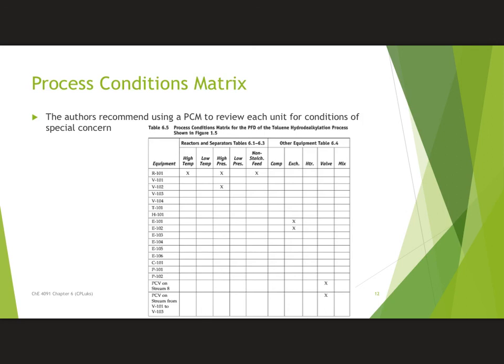Finally, let's look at the process conditions matrix. The authors recommend this matrix, which is a list of every piece of equipment in the plant and the various concerns we might have. When you start your design, as you gather information and add pieces of equipment—going from a block flow diagram to a process flow diagram—think about whether any of these issues are going to occur. If so, research whether there's another way that might be safer or more economical. This concludes this video lesson. We'll be looking at examples in class. Thank you very much for your time.